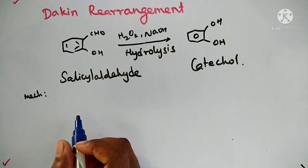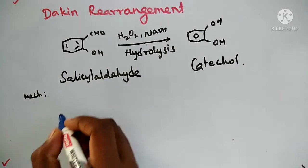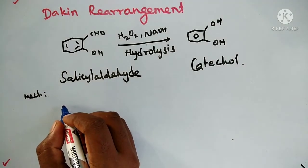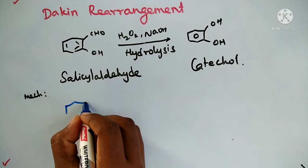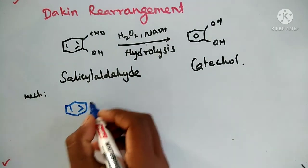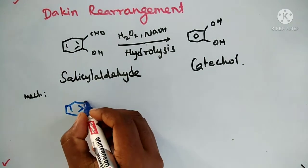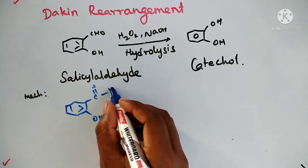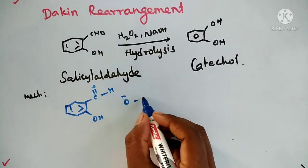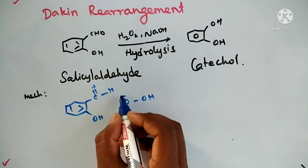Mechanism: This is similar to Baeyer-Villiger oxidation. In the presence of base, hydrogen peroxide forms OH bond, C bond O bond, H bond, O minus bond, OH minus.